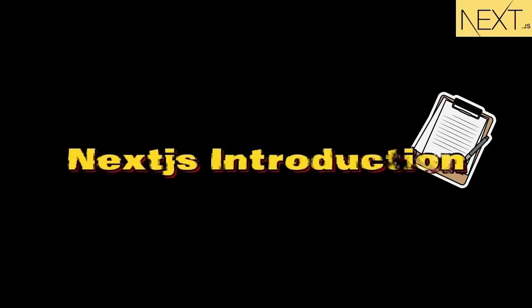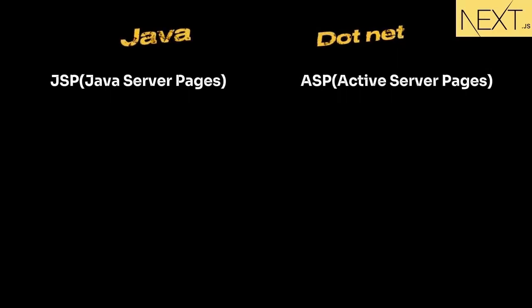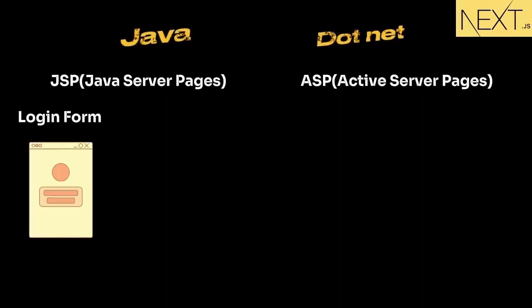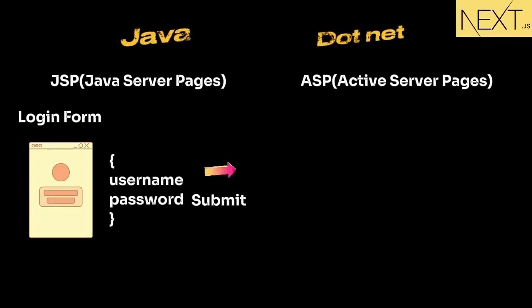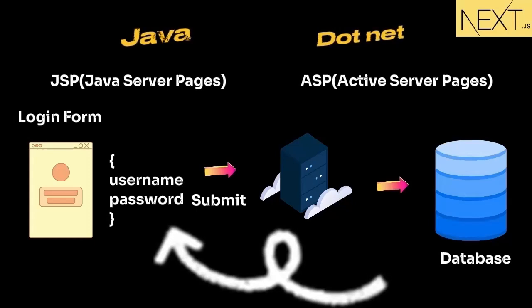First, we'll go back to the history of Java and .NET web application development. In the old days, there used to be something called JSP on the Java side for UI applications, and ASP on the .NET side. Both are server-side technologies. They render on the server and update the UI. For example, if there is a login form and you type the username and password and click submit, with JSP or ASP it will take those values, go to the server, save them, and send them back to the page.